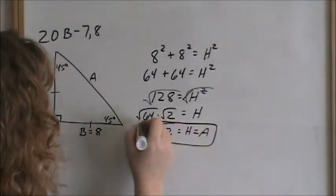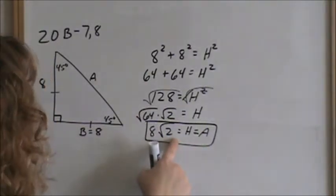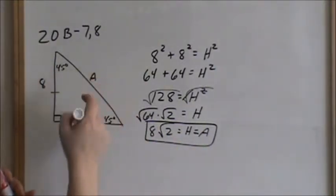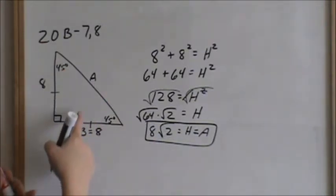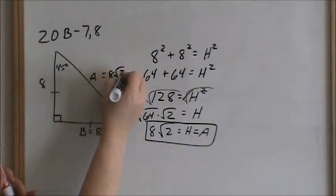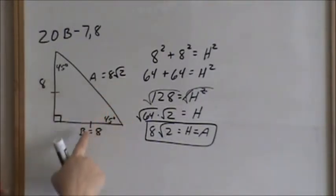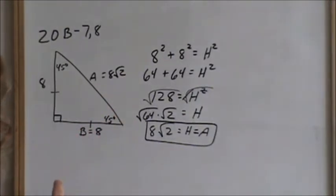Using the Pythagorean theorem, I just proved that in a 45-45-90 triangle the hypotenuse will always be the leg times square root of 2. In this case, the leg is 8.